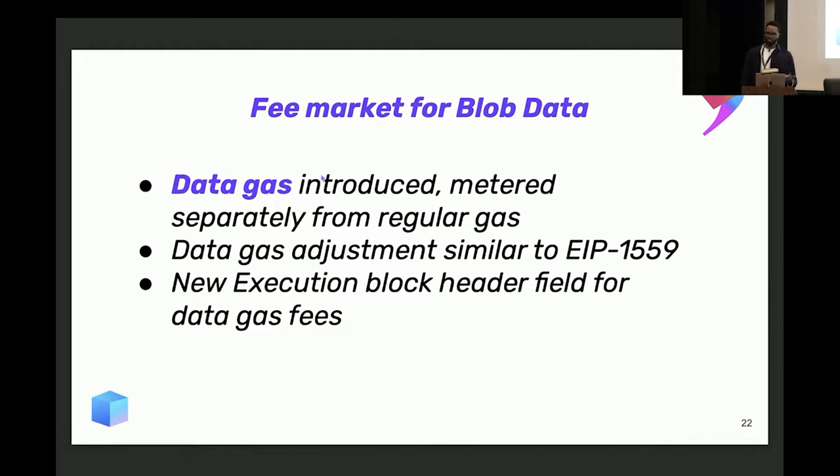One more thing worth pointing out is that since blob data is separate from call data, we need a way to price it. The fee market structure we came up with is introducing a new type of gas called data gas or blob gas. This data gas behaves regularly similar to regular gas. The semantics is very similar to 1559, in the sense that we have a fixed target for data gas for the entire block. If we notice that we're exceeding that target, then the gas price fees, the data gas fees go up. And if we're below the target, it goes down. The entire point is just a control system to keep data gas at a certain level so we don't overburden the network with huge blobs.